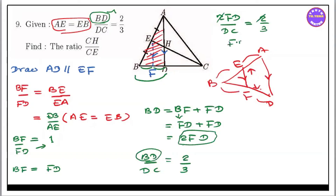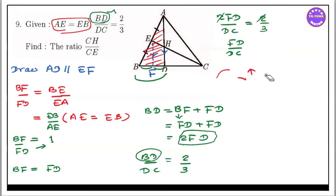FD by DC equal to 1 by 3. So 2FD equal to 1 by 3. And so, 3FD equal to 1 by 3.